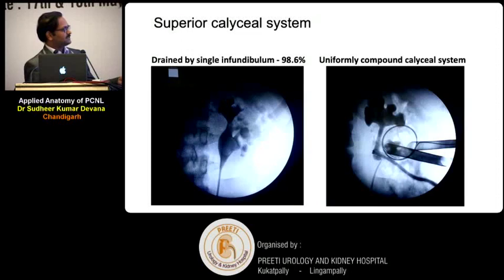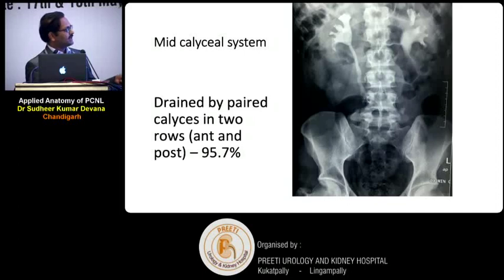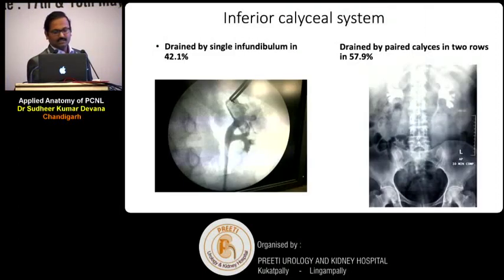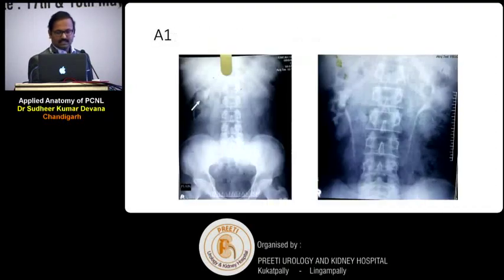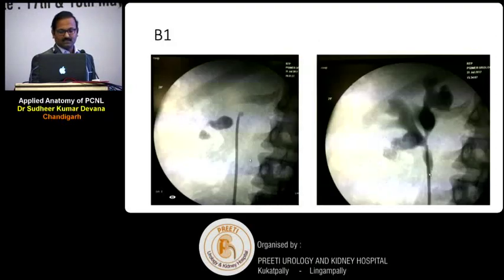Regarding calyceal orientation: the superior calyceal system has a single infundibulum and a compound calyceal system. The middle calyx always has two pairs of calyxes — anterior and posterior. The inferior calyceal system has a single infundibulum, or sometimes anteriorly and posteriorly oriented calyxes. My colleague has already covered the Sampio classification.